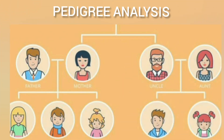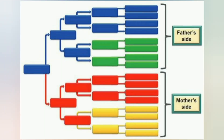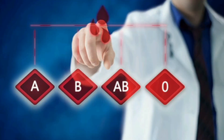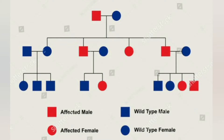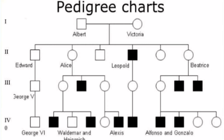Hello, dear students. This is another practical activity for Class 12 — about studying the prepared pedigree chart of genetic traits such as rolling of tongue, blood groups, widow's peak, and color blindness. Before going into how to prepare a pedigree chart, let me tell you about the theory of pedigree analysis and some important information that you have already studied in theory. I am just recapitulating those parts.